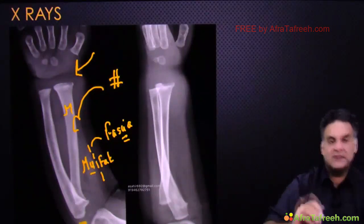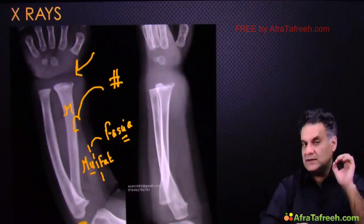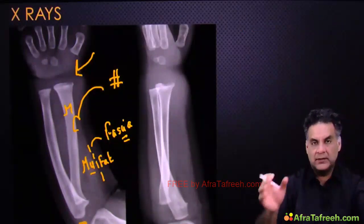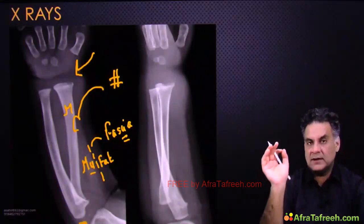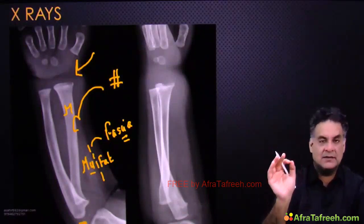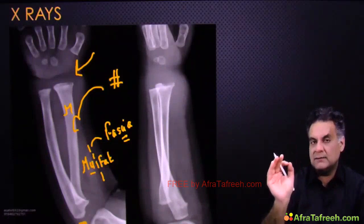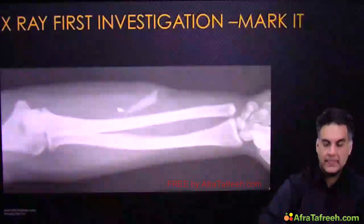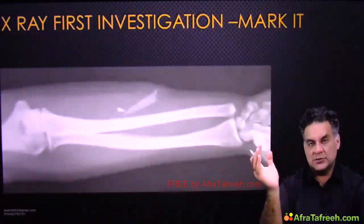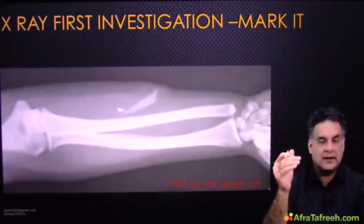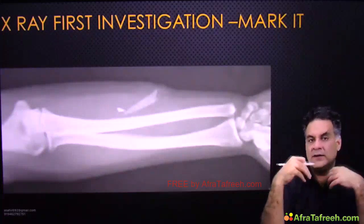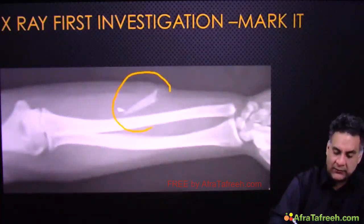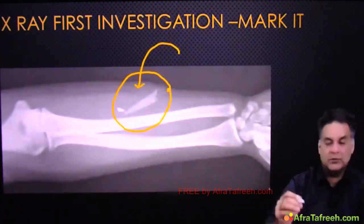Joint space is filled with cartilage, which is radiolucent. When you see decreased joint space, the cartilage is being destroyed — meaning we are dealing with arthritis. Also, X-rays can show anything that is radiopaque. Glass pieces are coated with lead at the back, which is why X-ray is often the first investigation to pick up glass pieces.